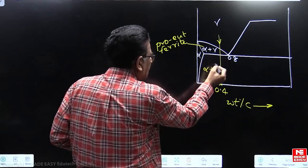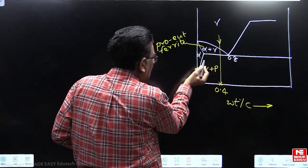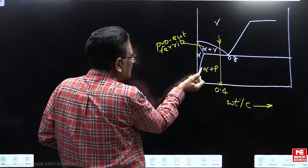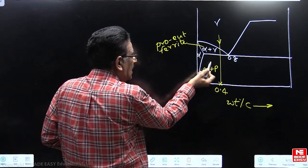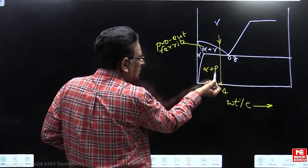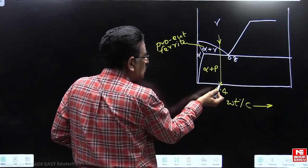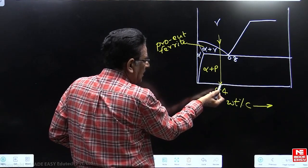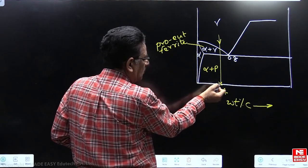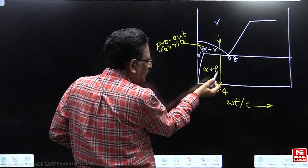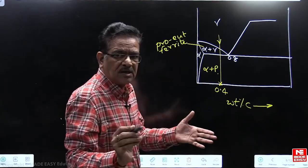So from this austenite, you are going to get ferrite. This alpha will cool down as it is. This is called as proeutectoid alpha and this gamma will decompose into alpha plus perlite. Now look here. So 0.4% carbon steel at room temperature will have proeutectoid ferrite plus perlite as the microstructural phases in it.